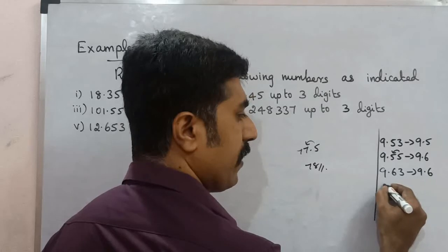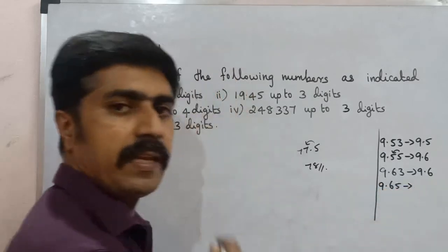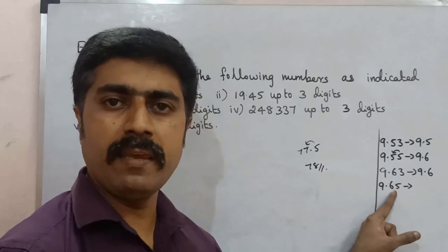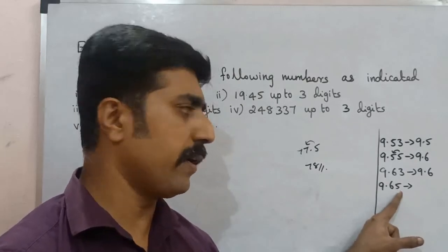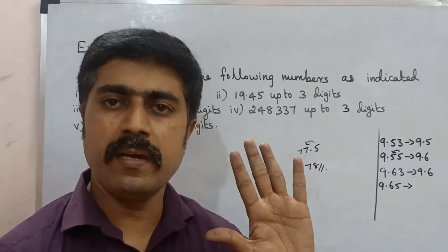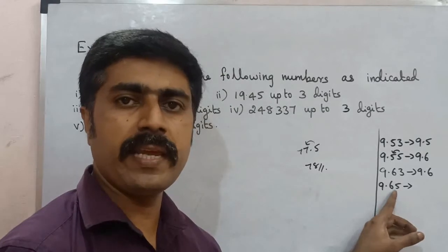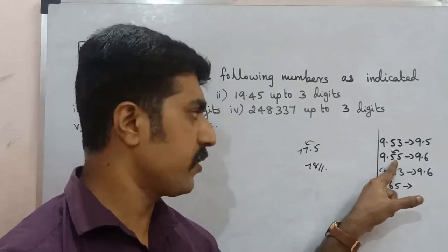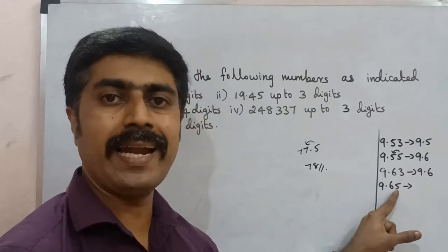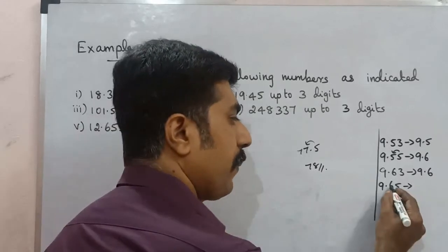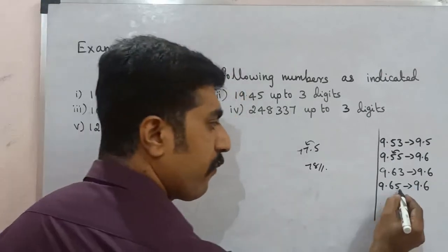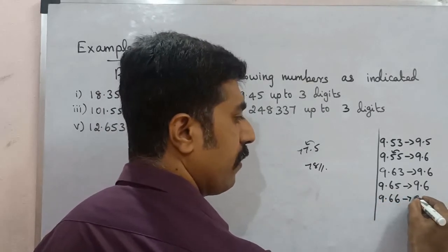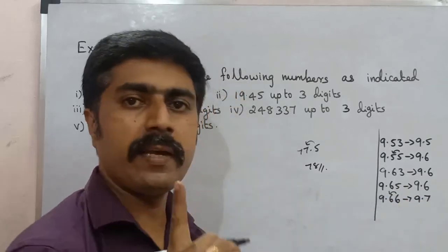One more example: 9.65 — here, 5 is the last digit. The preceding digit 6 is even, so the last digit 5 is dropped and the digit remains unchanged. If the preceding digit is odd, we add 1. So: odd → add 1; even → drop without change. For 9.66, rounding gives 9.7 since 6 is above 5.